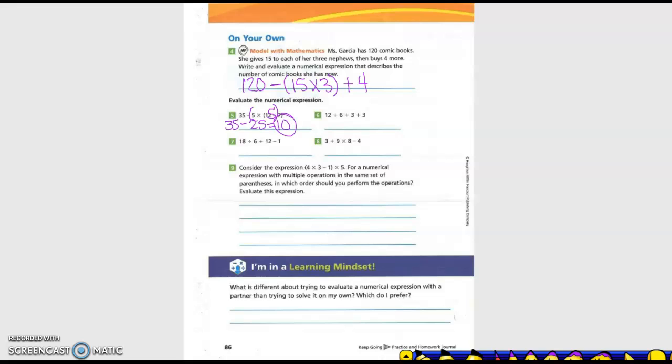Alright. Next one. 12 plus 6 divided by 3 plus 3. So we do not have parentheses. So should I put my parentheses? Yes. So then I identify what I need to do first. So what do I need to do first? 6 divided by 3. Okay. So I'm going to rewrite this. 12 plus what is 6 divided by 3? 2 plus 3 equals 17.